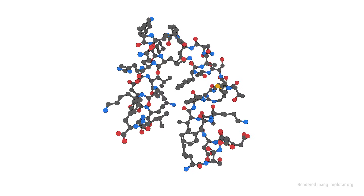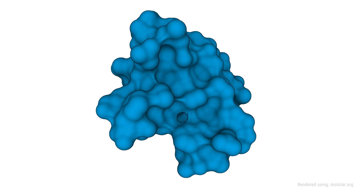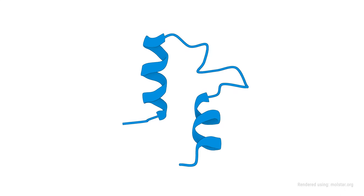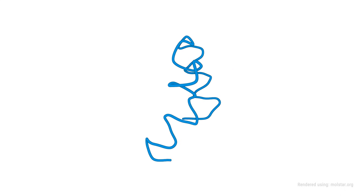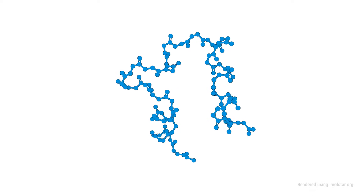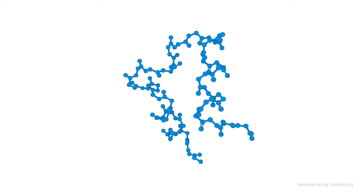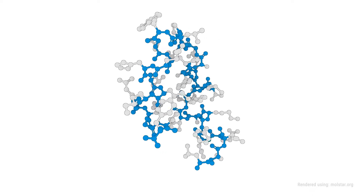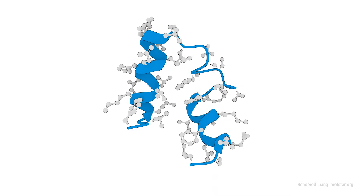In a ribbon diagram, you don't see individual atoms or the surface of the protein. However, you can see how a protein is a single chain that folds into a specific structure. The path of the chain is where the backbone of the protein is located. Side chains are attached to the backbone, but they aren't displayed in the ribbon diagram, because that would obscure the structure.